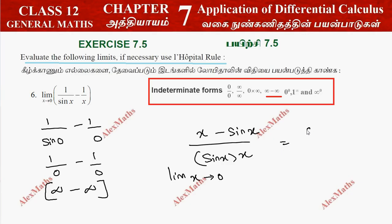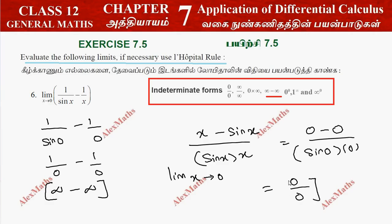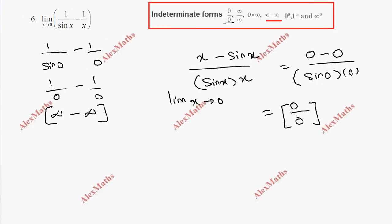Now we extend the limit to 0 and substitute. Substituting x = 0 gives 0 minus 0 divided by sin(0) into 0, since sin(0) = 0, yielding 0/0, which is indeterminate.